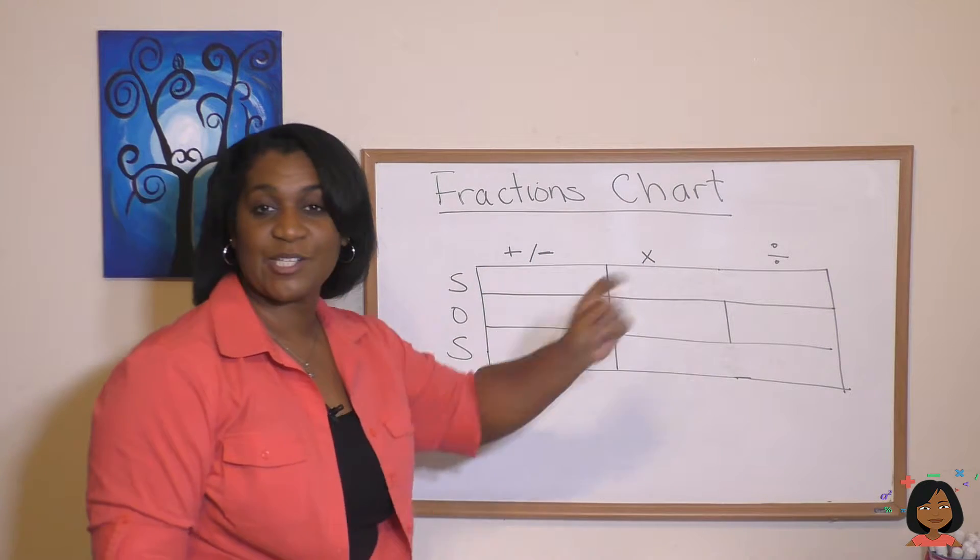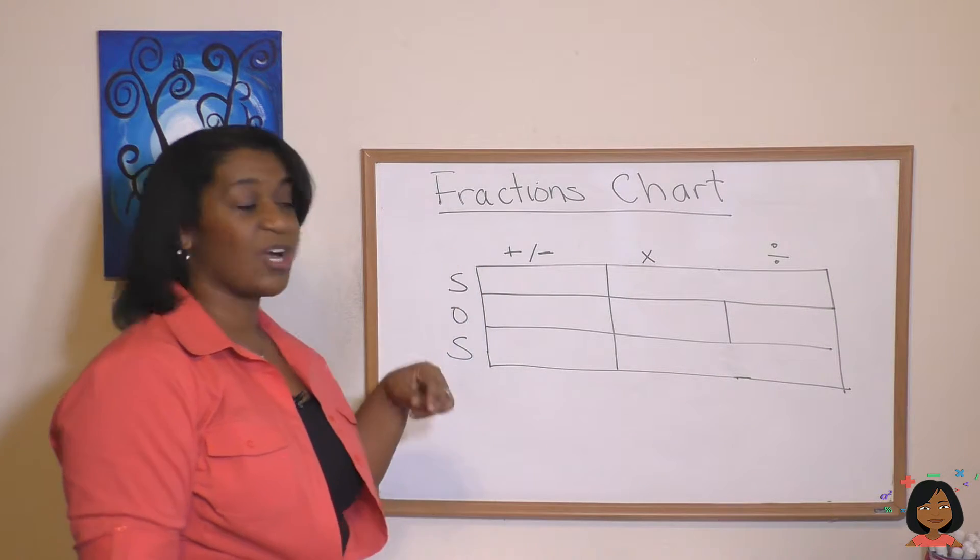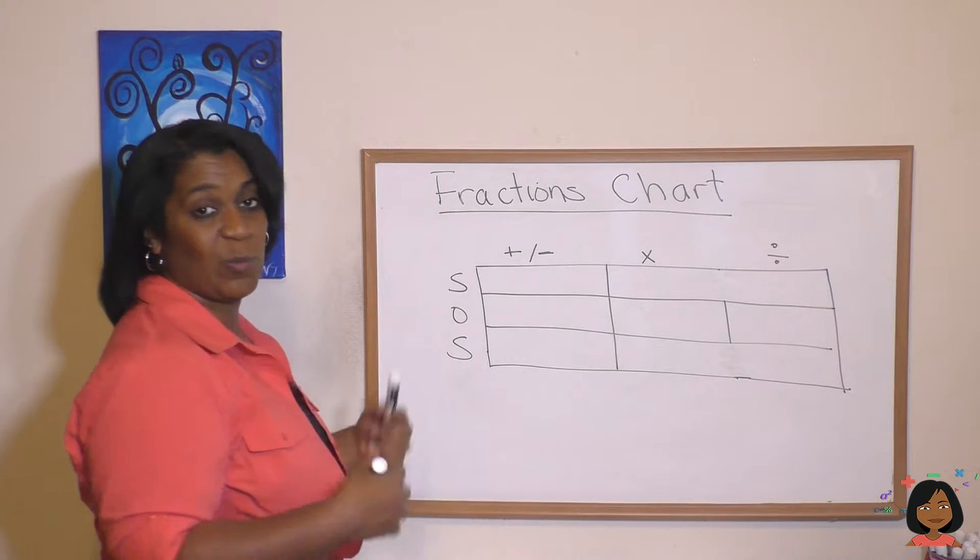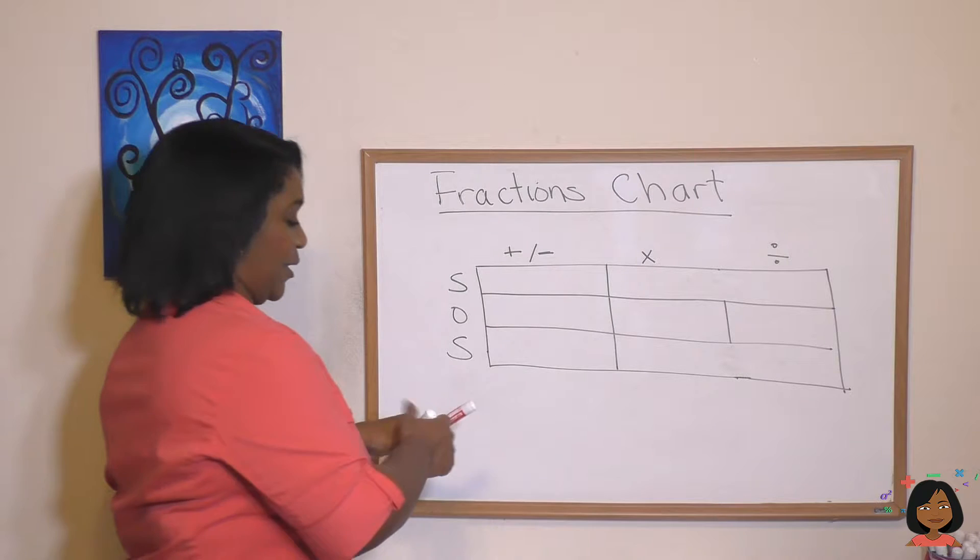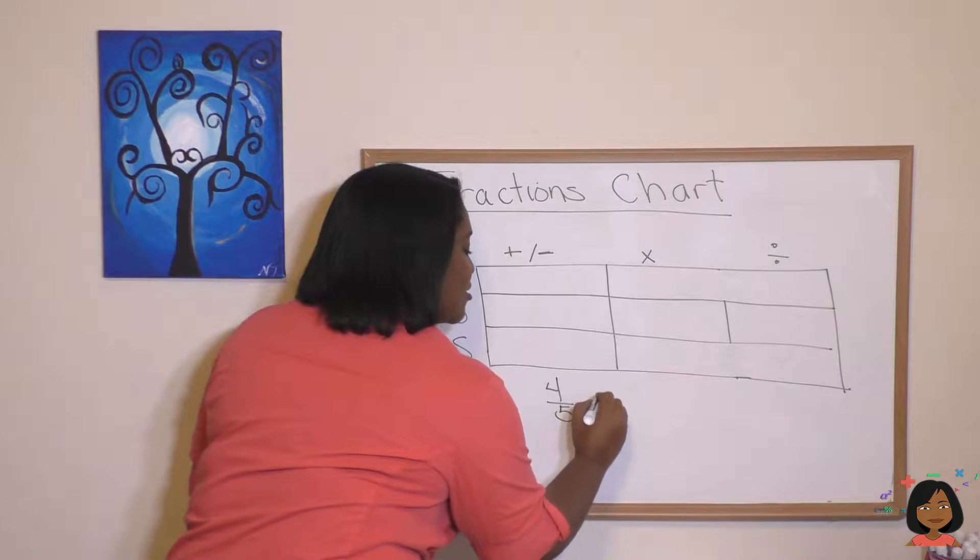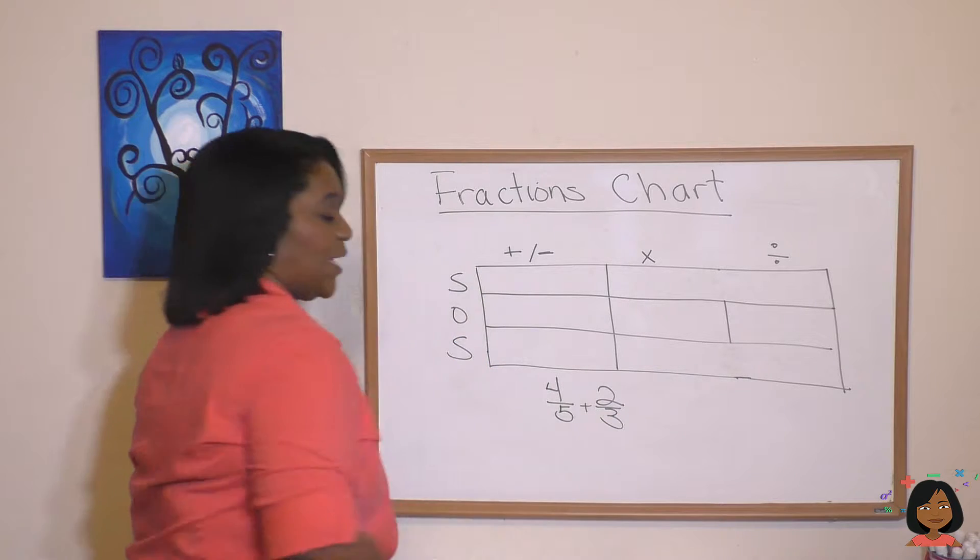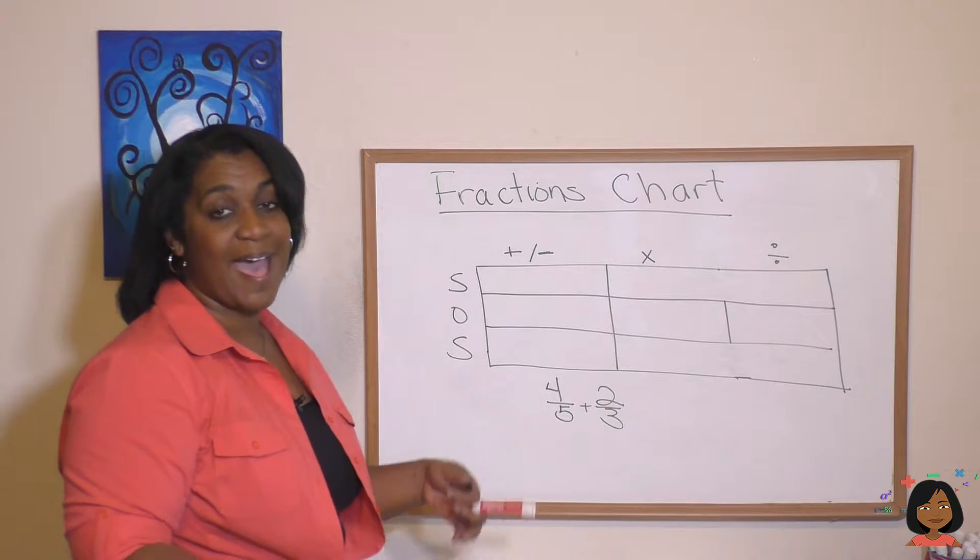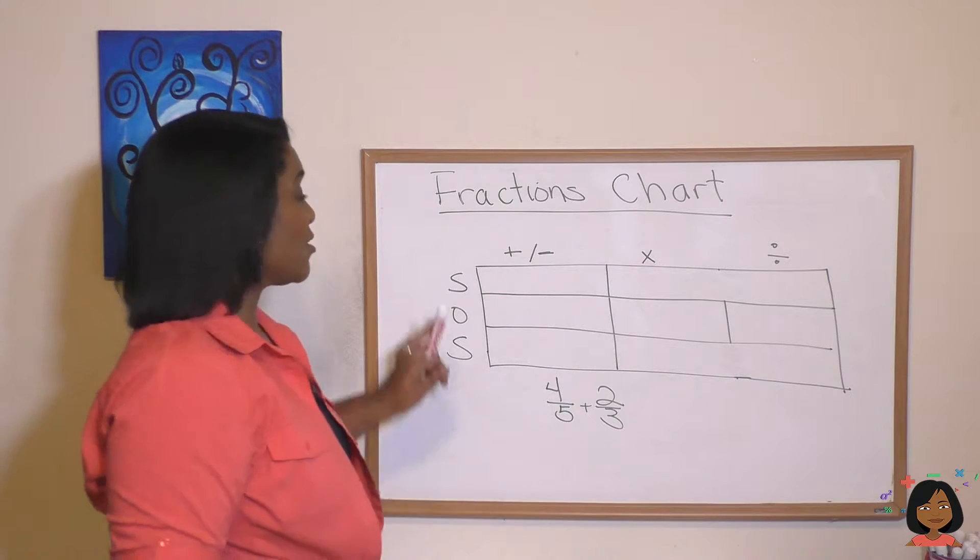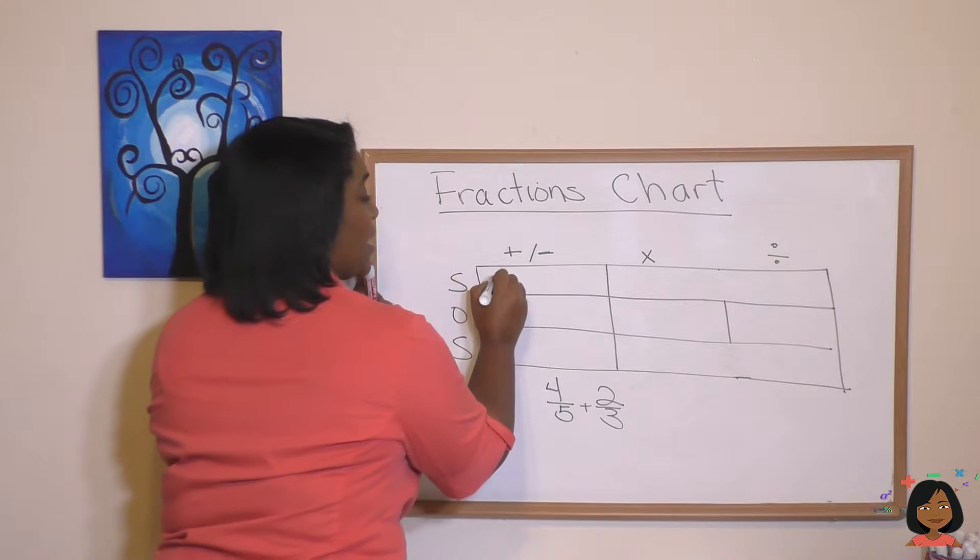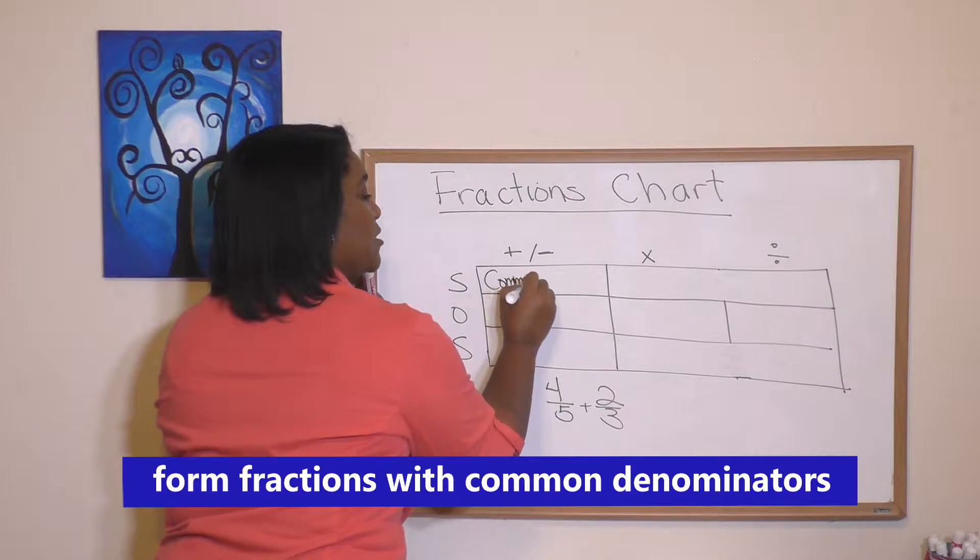Let's start with addition and subtraction. The first thing we have to do when we are adding fractions, for example, let's say I had the fraction 4/5 + 2/3. Can I work on that right away? No. So what do I have to do? I've got to get them to have a common denominator. So that's how shape looks when we're adding and subtracting. I'm going to write common denominator.